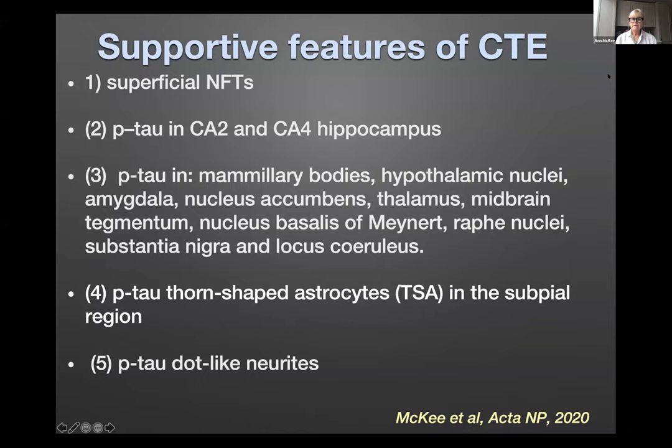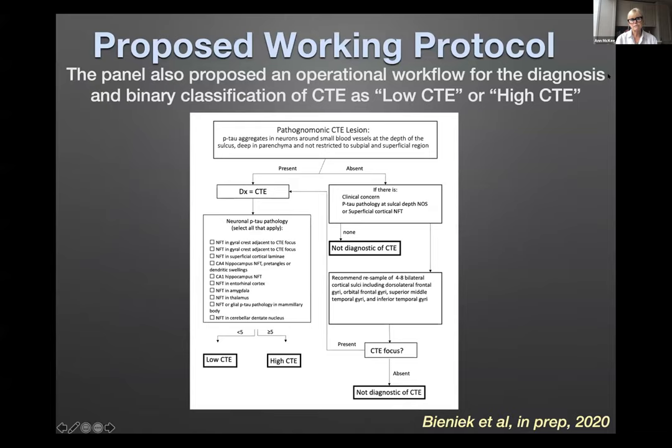There are some supportive features of CTE. None of these features are sufficient for the diagnosis, but if you find them, you may be more suspicious and want to do additional sampling. Supportive features include: presence of superficial layers of NFTs (very common in the temporal cortex and insula); CTE commonly affects CA2 and CA4, often early in the disease, which may distinguish it from Alzheimer's disease; CTE affects subcortical and brainstem nuclei including mammillary bodies, hypothalamic nuclei, amygdala, nucleus accumbens, thalamus, midbrain tegmentum, nucleus basalis of Meynert, raphe, substantia nigra, and locus coeruleus. Tau-containing thorn-shaped astrocytes are commonly present in the subpial region, but their presence alone is not diagnostic of CTE. Also, neurites in CTE very often have a dot-like appearance.